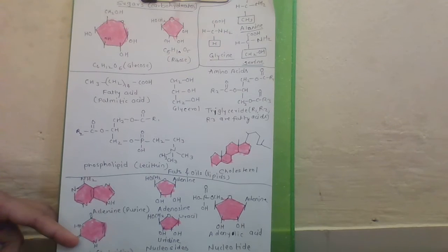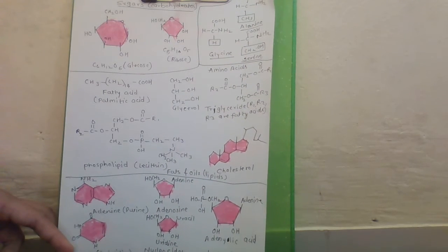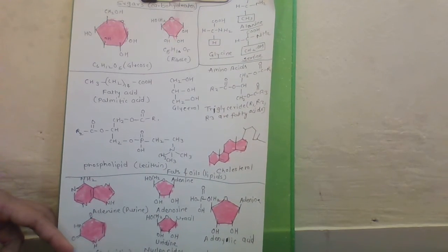And nucleosides are adenosine, guanosine, thymidine, uridine and cytidine. You may remember, nucleic acids like DNA and RNA consist of nucleotides only.